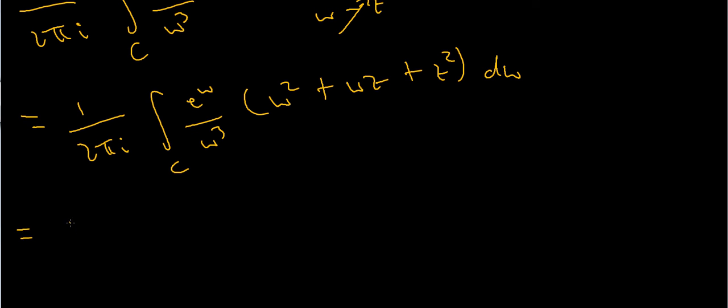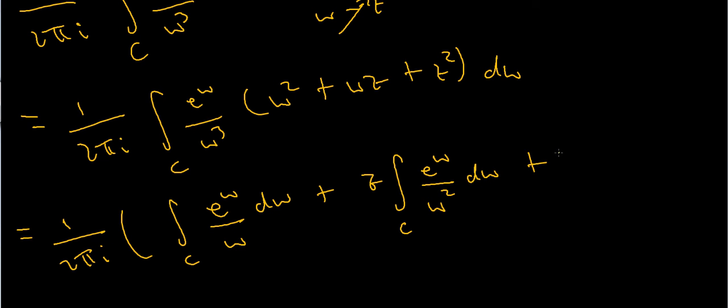This should just be 1 over 2 pi i times the integral over C of e to the w over w, because w squared cancels with w cubed to leave w, dw, plus z times the integral over C of e to the w over w squared dw, plus z squared times the integral over C, e to the w over w cubed dw.